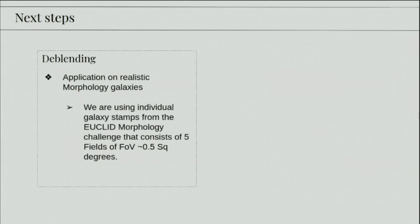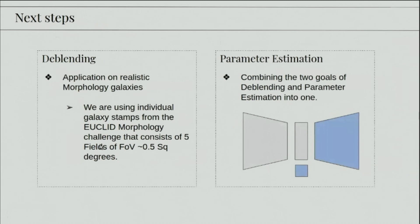So for the future, I plan to apply this work on realistic galaxies, which are the ones actually you saw from Hubert's talk, which were generated as part of Euclid morphology challenge, consisting of five fields, a field of view of 0.5 square degrees. And think of applying something like transfer learning techniques to go from simulation to real galaxies.